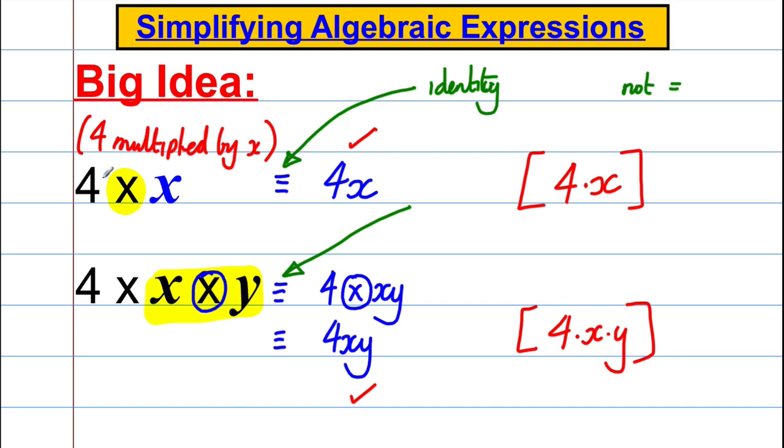And the reason why is 4 multiplied by x, another way of writing it, that in identical form is 4x. It's not an equation we can solve, we only use an equal sign for an equation we're solving. When we're talking about two things that are the same as each other but just written differently, we would use an identity sign. Okay, so let's move on with a few examples.